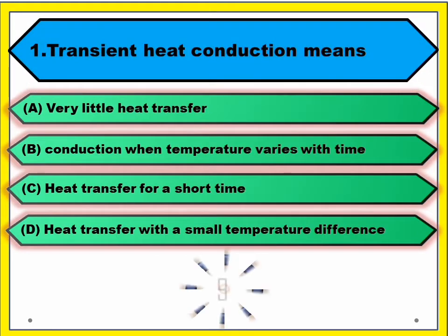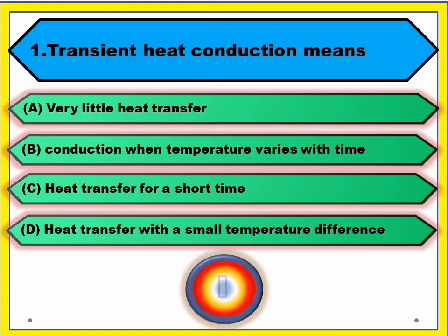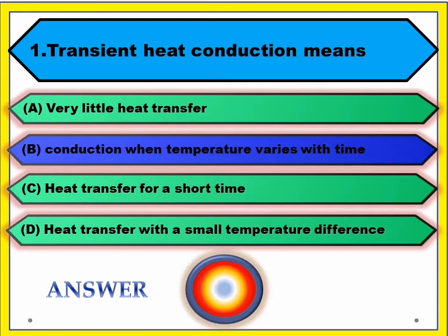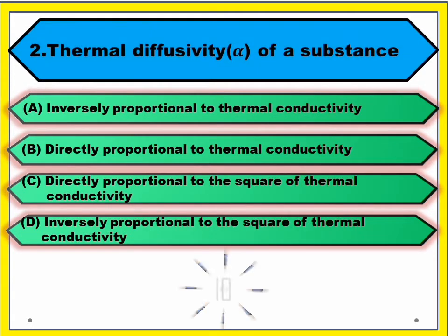Heat and mass transfer, question number one: transient heat conduction means — we can remember 'transient' as temperature variant. So temperature varies with time. Answer: conduction when temperature varies with time.